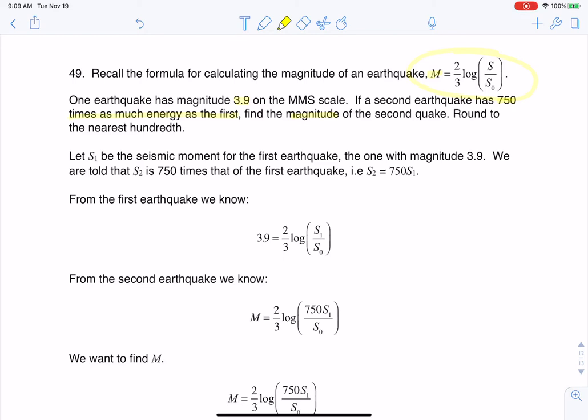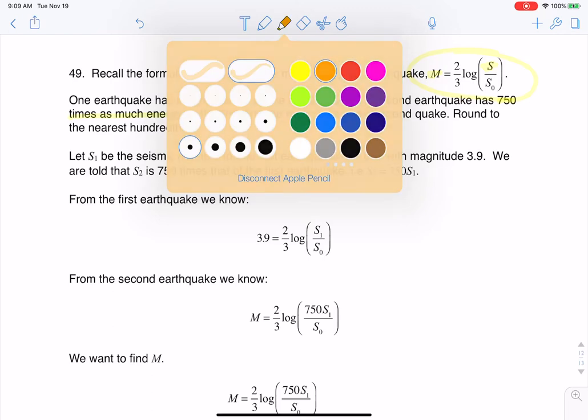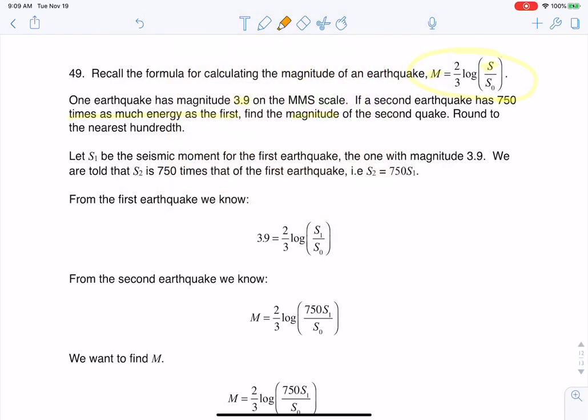So what I need to figure out is what I'm going to plug in for S. If you recall, and it's been a little while, we haven't looked at this since earlier in chapter 6, but this S sub 0 here, that's just the minimal amount of energy, or the minimum amount of energy we can measure that's released by an earthquake. So let's start to play with this formula, and I know that when I ultimately find this magnitude, it's got to be larger than 3.9, but how much larger is going to be the question?